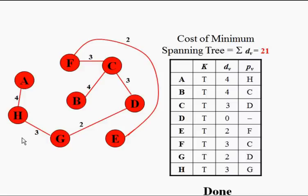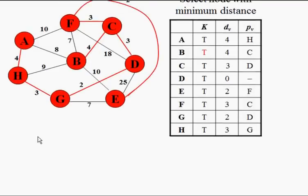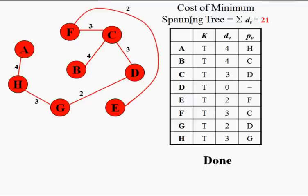Prim's algorithm can be implemented in many ways. With an adjacency list the complexity is O(V²). You can also implement it with a Fibonacci heap or binary heap for better performance. The total cost of this minimum spanning tree is 21 — adding all edges: 4 + 3 + 2 + 2 + 2 + 3 + 3 + 4 = 21.